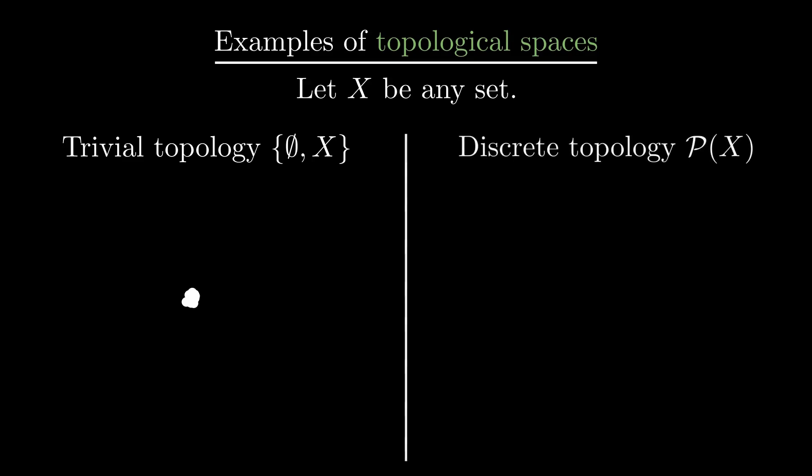Another topology is the discrete topology, which consists of all subsets, so is the power set. The discrete topology may be interpreted as that all points are isolated from each other.